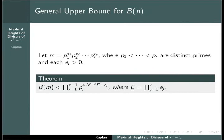Here is the theorem from that section. For the rest of the paper, we focus on b of n for particular types of n.